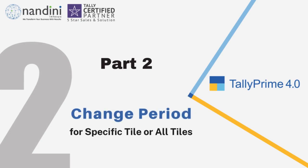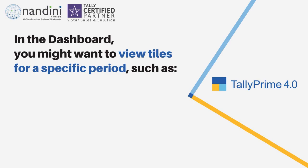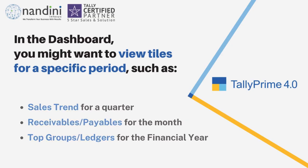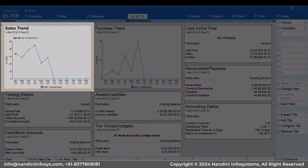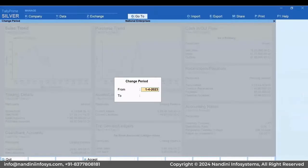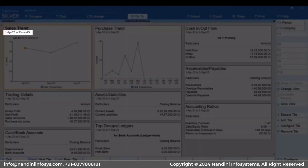Now let's see how to change the period of a specific tile and the entire Dashboard. You might want to view the sales trend of a specific quarter, receivables or payables of the current month, and top groups or ledgers across the financial year. In such a case, you can choose to change the period of specific tiles as per the information you want. To change the period of a specific tile, move the cursor to the tile and press F2 or Alt plus F2, enter the from and to dates and press Enter. As you can see, the period of the tile is changed.